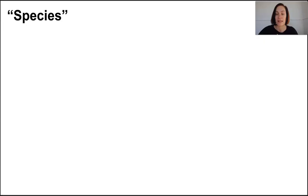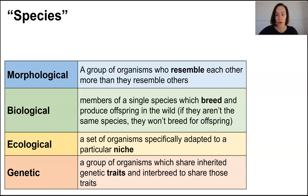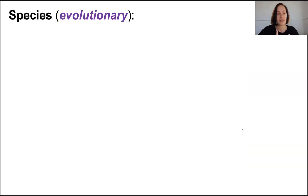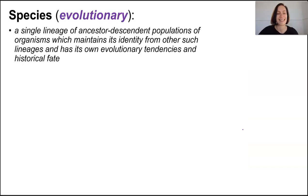If we're going to talk about speciation, we have to review our understanding of what a species actually is. Remember that there are multiple definitions of this word, because any one definition is hard to apply to all organisms in all contexts. For example, we can look at a biological definition, which is all about interbreeding and having viable offspring — but does this actually work for organisms that reproduce asexually? The evolutionary concept of species is defined as a single lineage of ancestor-descendant populations of organisms which maintains its identity from other such lineages and has its own evolutionary tendencies and historical fate.